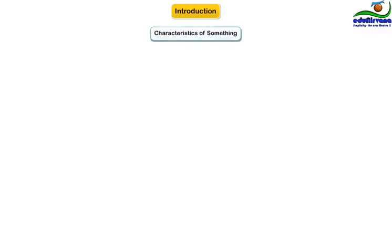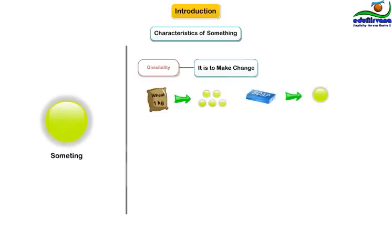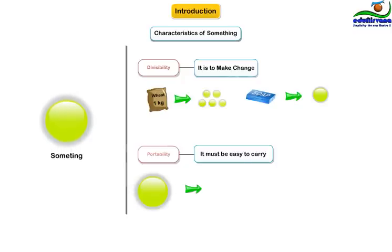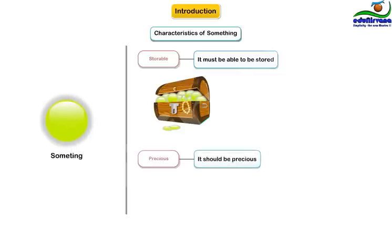The discussion also identified the following characteristics of that something. It must be divisible so that it is easy to make change — for example, one kilogram of wheat could be five units of that something and one soap could be one unit. It must be easy to carry — if it is too bulky, like wheat, it would be difficult to carry to the market for transacting. It must be storable for future needs, meaning it should not be perishable or intangible. And it should be precious — that is, not available in infinite amounts; air, for example, is free to everyone, so something available freely commands no respect.